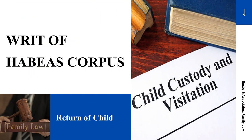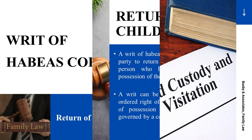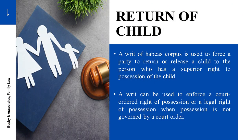Writ of habeas corpus — return of a child. A writ of habeas corpus is used to force a party to return or release a child to the person who has a superior right to possession of the child. The writ can be used to enforce a court-ordered right of possession or a legal right of possession when possession is not governed by a court order.